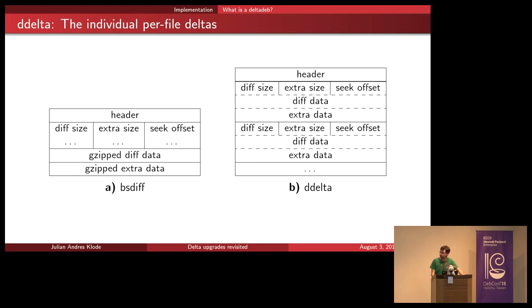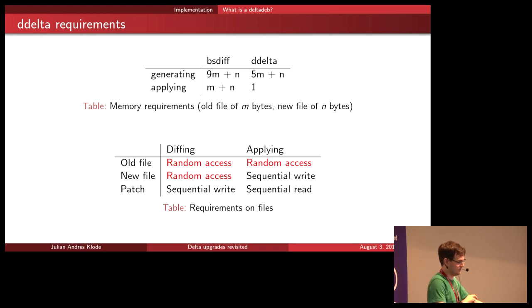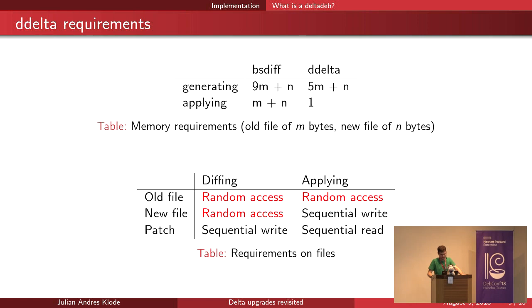Comparing bsdiff against the delta deb format: the delta requires about half the memory of bsdiff when generating a diff. Memory usage is still linear to the bytes in the old plus new file when generating, but when applying a delta we can do it with constant memory usage — compared to linear — which is a huge win. We require random access on old and new files when generating, but applying only requires random access on the old file. We can sequentially read the patch file from the pipe and sequentially write out the new file, which should be efficient, mostly on SSDs.